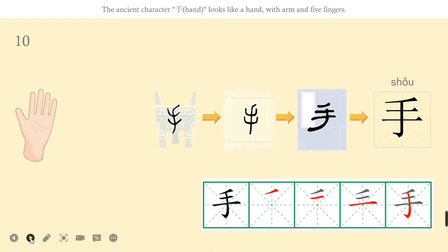Let's learn how to write. The first stroke is piě. The second stroke: héng. The third stroke: héng. And the last stroke is shùgōu.